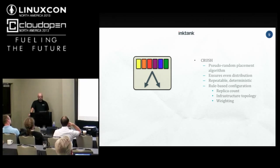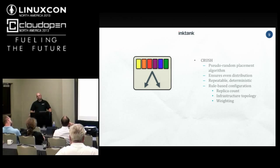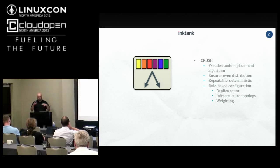CRUSH uses pseudo-random placement. Via a CRUSH map, you define what your infrastructure looks like — N disks in Y servers in X racks in some number of rows — and create rules about where data should live. If you want a fast data pool, you say this pool uses SSDs. Or you can combine spinning rust with one SSD handling the journal for all of them. You can also create custom failure domains based on power circuits or whatever. CRUSH is relatively simple but quite powerful in what you can do with it.